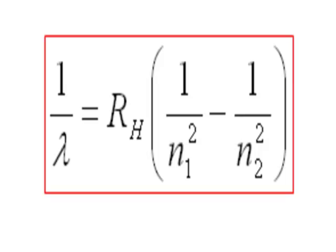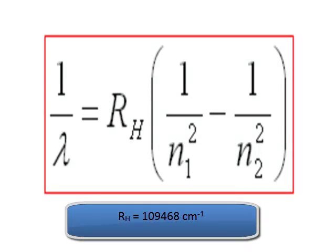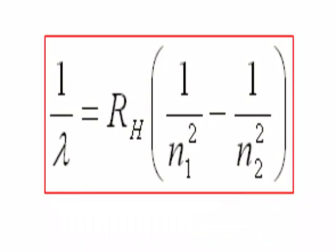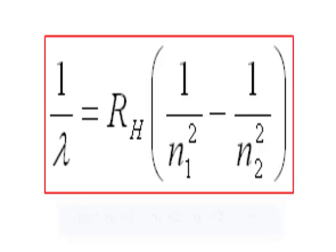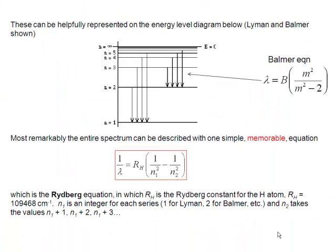This is the Rydberg equation, expressed in terms of one over the wavelength as an energy unit. R_H here is the Rydberg constant for the hydrogen atom, given in wave numbers — reciprocal centimeters — with a value of 109,468. In this equation, n1 and n2 are both integers. n1 is the home position: for the Lyman series n1 equals one, and n2 takes values n1+1, n1+2, n1+3, and so on up to infinity. For the Balmer series, n1 equals two, and n2 can take the values three, four, five, and so forth.